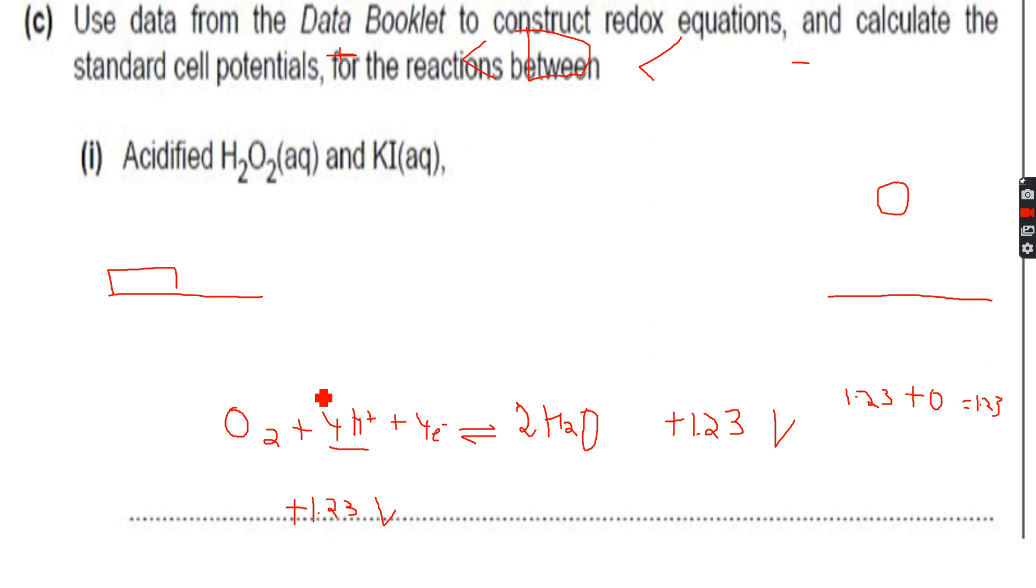This is another question altogether. Use data from the data booklet to construct redox equations and calculate the standard cell potentials for the reactions between acidified H2O2 aqueous and potassium iodide aqueous. There is a trick - you can either use the data for the potassium ions or the iodide ions. Let's see which one based on what is being reduced and oxidized.